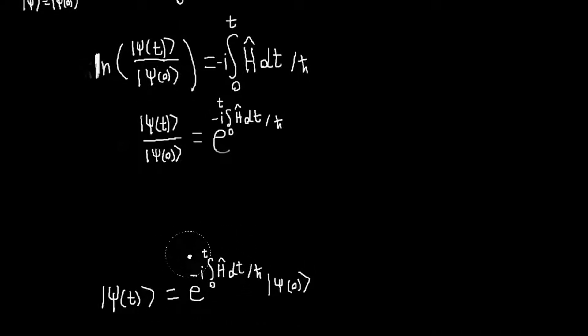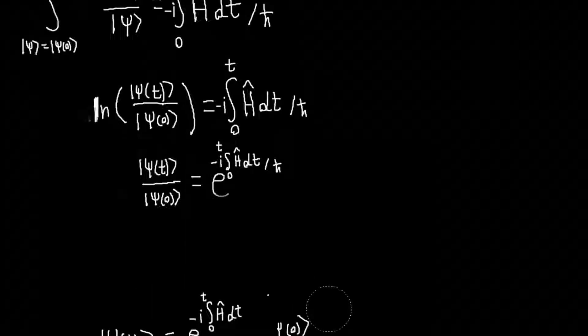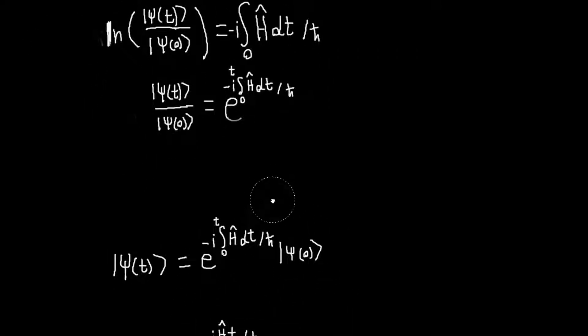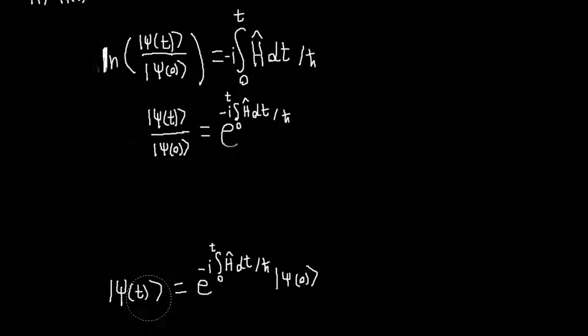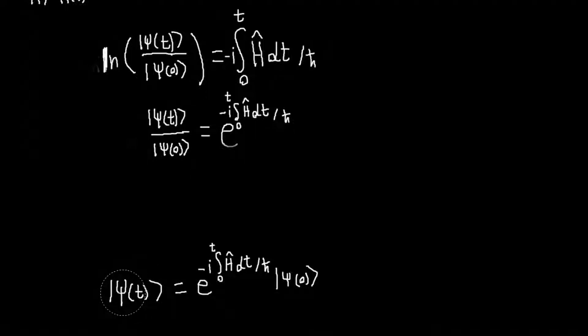So again, a little bit of a shady derivation, but what is this telling me? This is saying that to get my state ket as a function of time, what I can do is apply this operator to my initial state ket, as opposed to solving the Schrodinger equation.